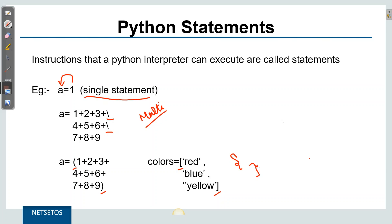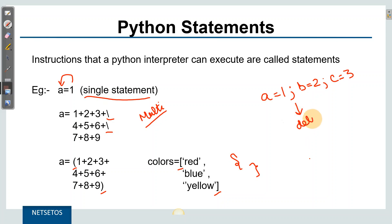If you want multiple statements in a single line, you can use a semicolon as a delimiter. For example: 'a = 1; b = 2; c = 3'. The semicolon acts as a delimiter between statements. Alternatively, you can write each in multiple lines, but if you want to execute them in a single line, you can use the semicolon approach.